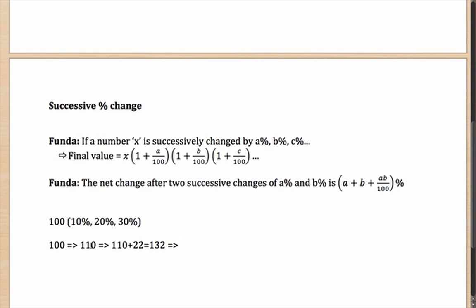It is not going to be 30% of 110. It is going to be 30% of 132. 30% of 132 is 39.6, which will lead you to the final value of how much is it? If it was 40, it would have been 172. So it is 171.6.